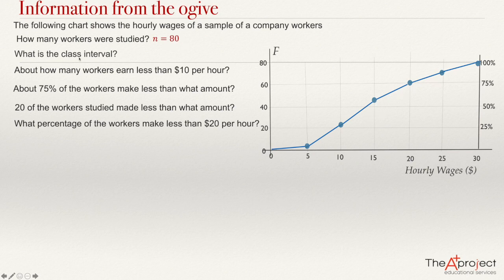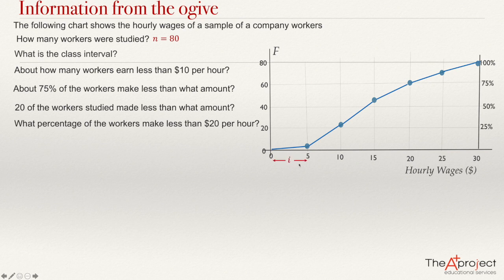The next question: what is the class interval? The ticks on the x-axis represent the limits of each interval. The first interval is from 0 to 5, the second from 5 to 10, so each interval has a width of 5. For example, 10 minus 5 equals 5, or 15 minus 10 equals 5. This distance between the limits of each interval is what we call the class interval or width of the class. So i equals 5.